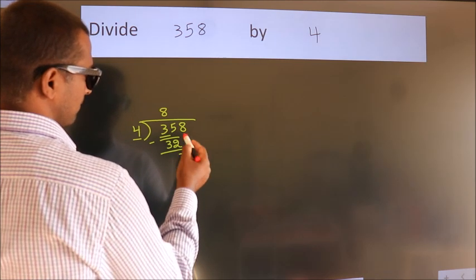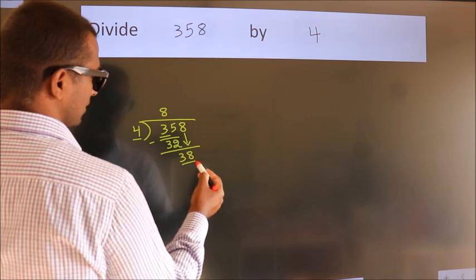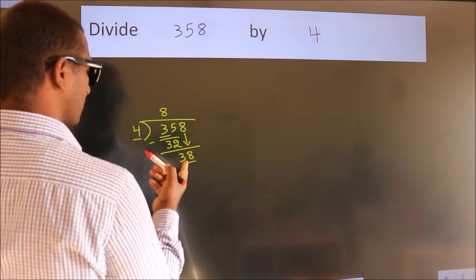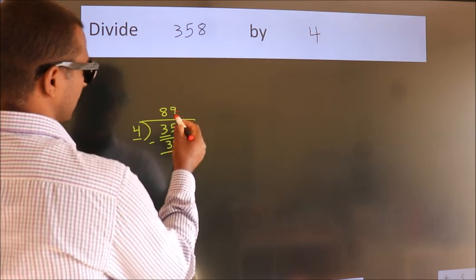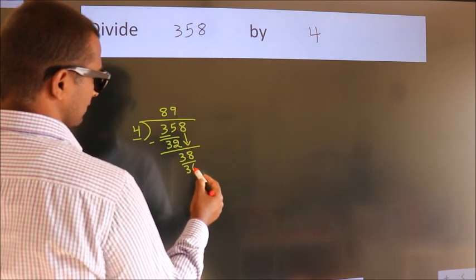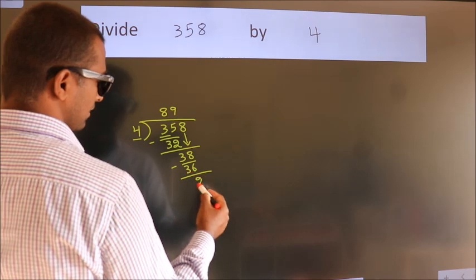After this, bring down the beside number. So 8 down, so 38. A number close to 38 in the 4 table is 4 nines, 36. Now we subtract. We get 2.